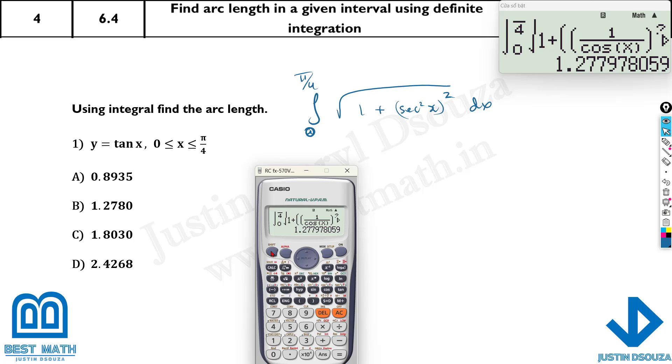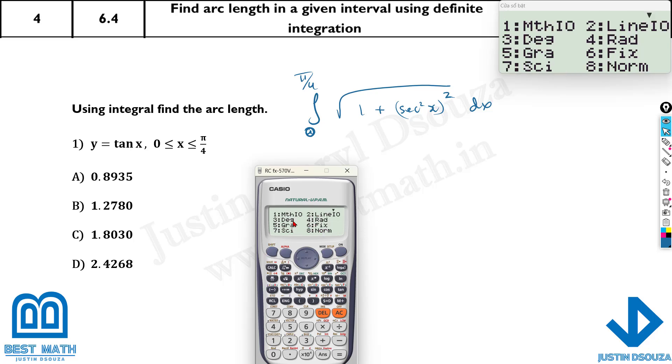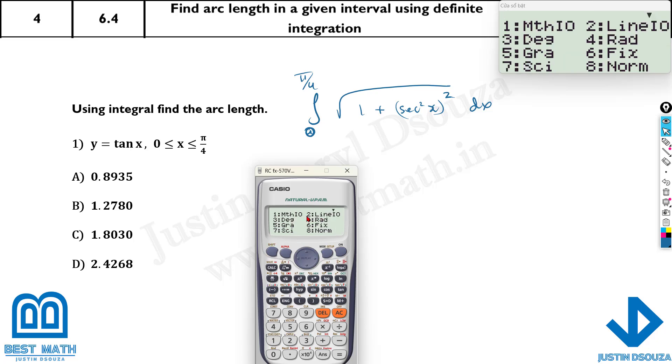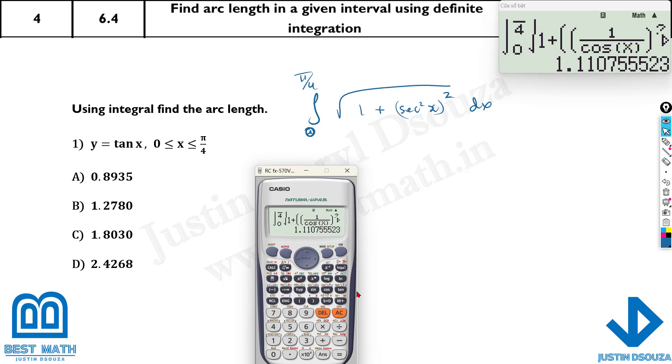So that is the answer. Now if I have not put in radian mode—shift mode, and let me put it back to degree mode—see, the answer is different. So shift mode and 4 to radian whenever you have trigonometric functions. The answer is 1.280. That's the thing.